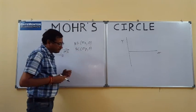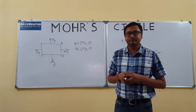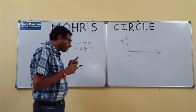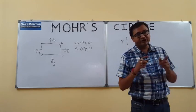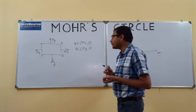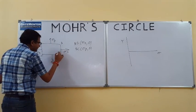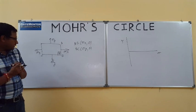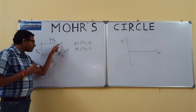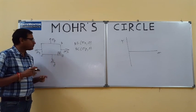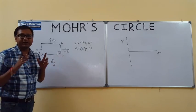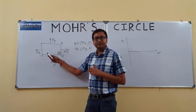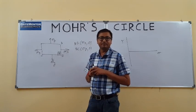Plane AB and plane BC will each be represented by a point on the Mohr's circle. Every plane at an angle of theta degrees in reality will be at an angle of 2-theta degrees on the Mohr's circle. Plane AB and BC are at 90 degrees to each other, so they will be two diametric points on the Mohr's circle.